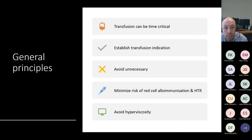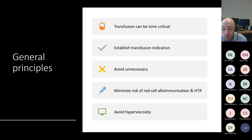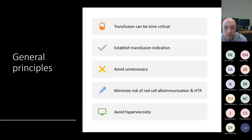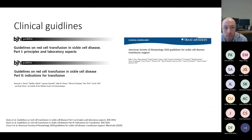It's very important to establish an indication for transfusion and avoid unnecessary transfusion. From work done with SHOT it's clear that sometimes transfusion is given when it's not always required. It's important to minimize the risk of alloimmunization and hemolytic transfusion reactions, and avoid hyperviscosity. The viscosity of blood containing sickle cells is much higher than normal red blood cells, so it's important to consider the hemoglobin concentration and percentage of sickle hemoglobin to maximize oxygen delivery without increasing overall blood viscosity.